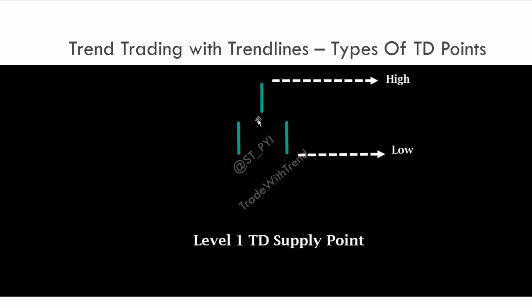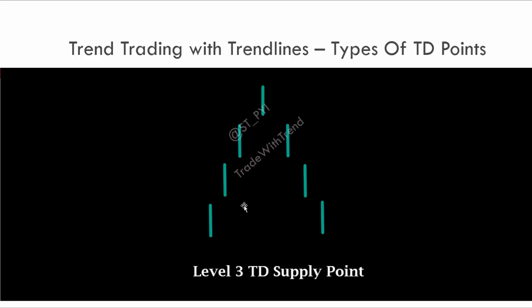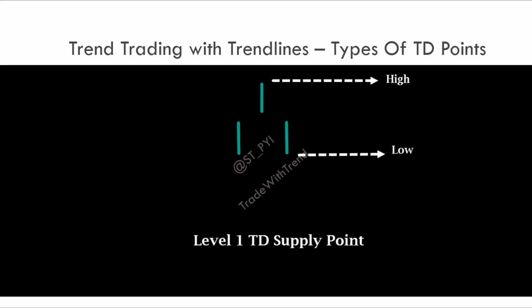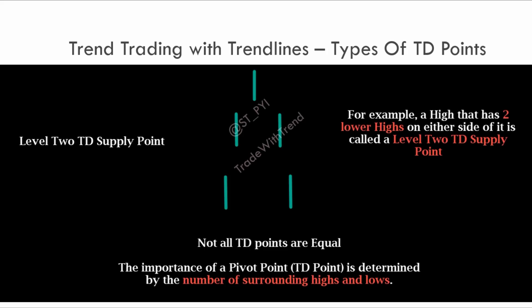This is a level one TD supply point. Now look at this — this is a level three TD supply point. Why? Because taking this bar as the reference bar, we have one, two, three lower highs on the left side, and one, two, three lower highs on the right side. So this becomes a level three supply point. A level three TD supply point has much greater relevance than level one and level two.